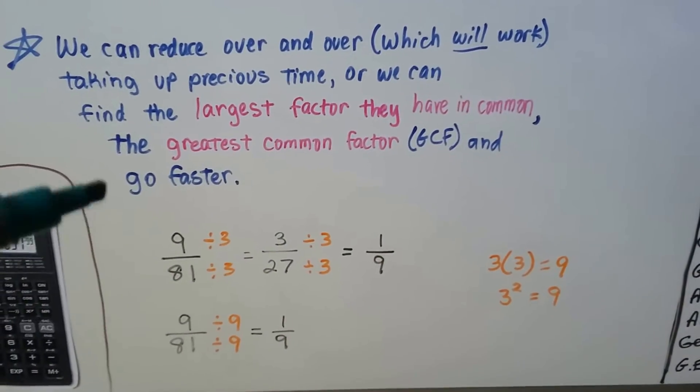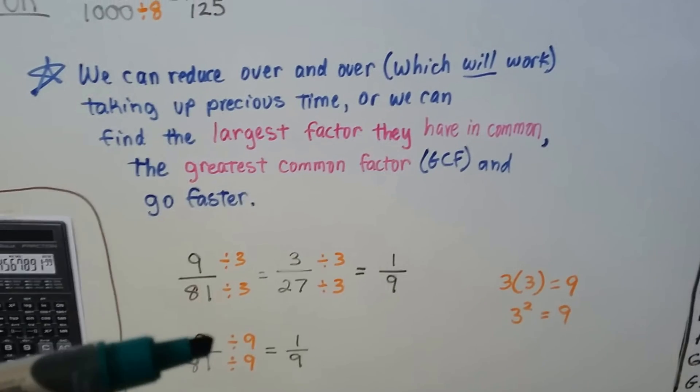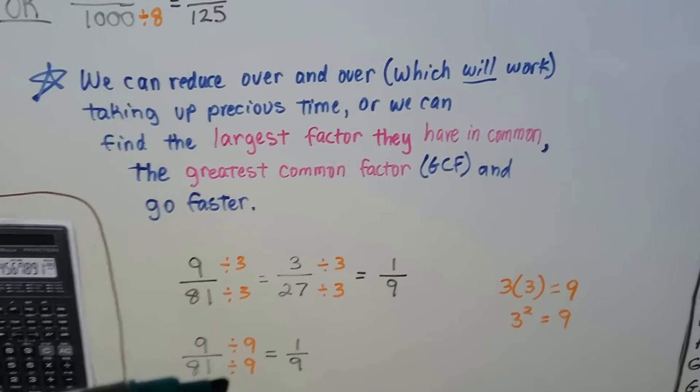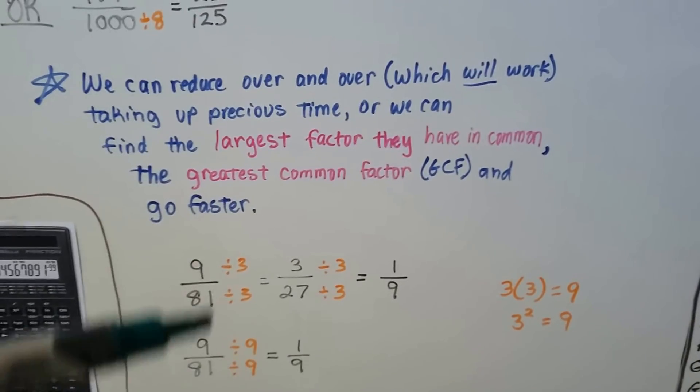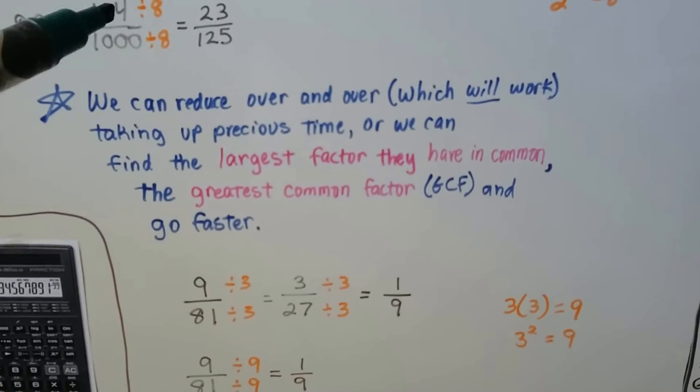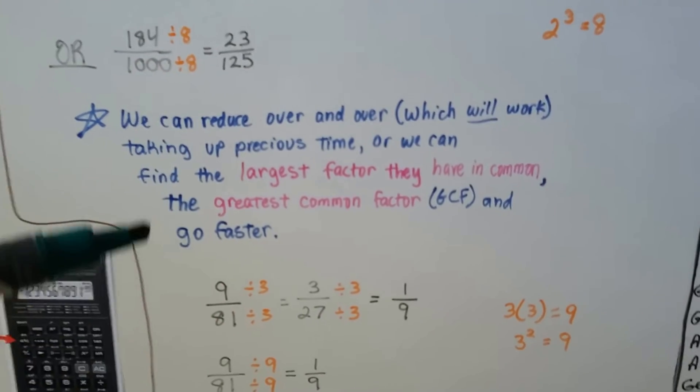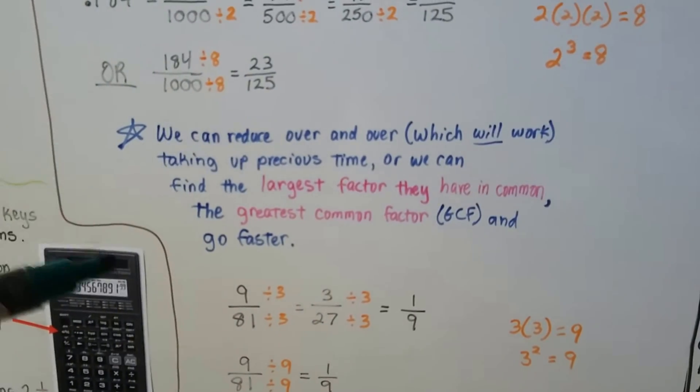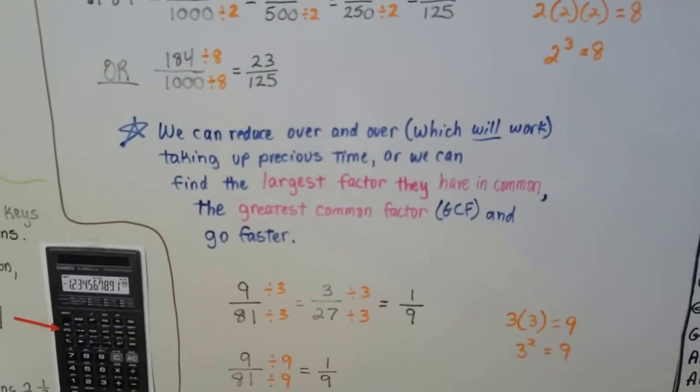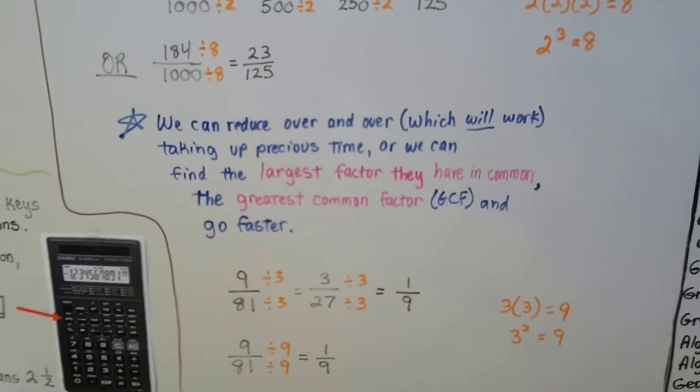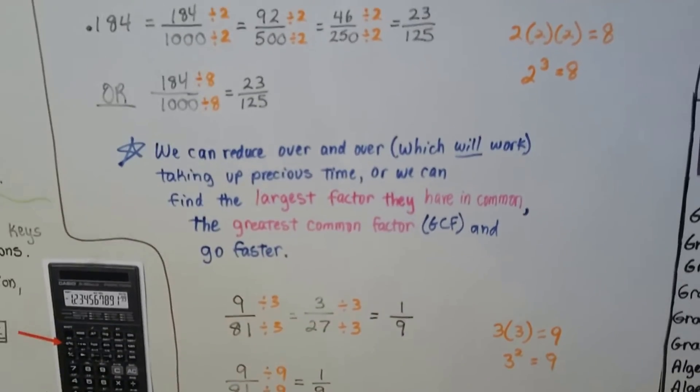So if you want to save some time, try to find the largest factor that they have in common. That's the greatest common factor, that GCF you might have heard about. The greatest common factor is going to help you save some time, and if you save 30 seconds on every single problem, that could add up to 5-10 minutes during the whole test that you'll have on other problems.